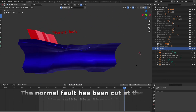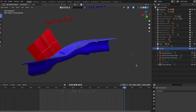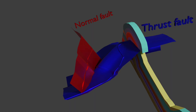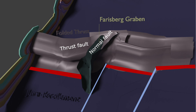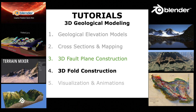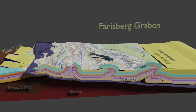Here we see the final model of the thrust fold and the normal fold. Of course, this has not been constructed in isolation but simultaneously with the construction of the deformation of the over-thrusted thrust sheet. This leads to tutorial part 4, where I will show how true 3D fold construction can be done in Blender to arrive at the model like you can view in the following clip sequence.